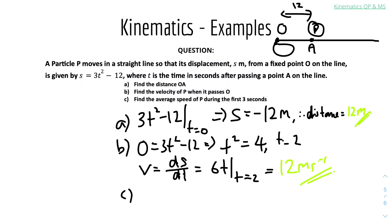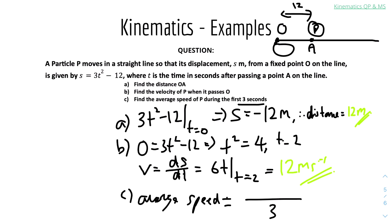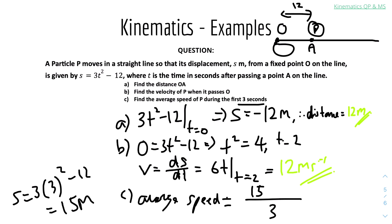Example 1c: Find the average speed of P during the first 3 seconds. Average speed equals total distance over total time, and the total time is 3 seconds. After 3 seconds, displacement = 3(3²) − 12 = 15 metres. The total distance travelled is 15 metres (after 3 seconds) plus 12 metres (the initial distance from O), giving 27 metres. Therefore the average speed equals 27 ÷ 3 = 9 metres per second.